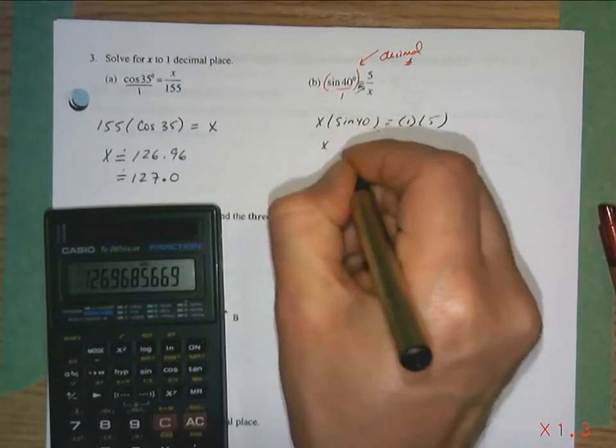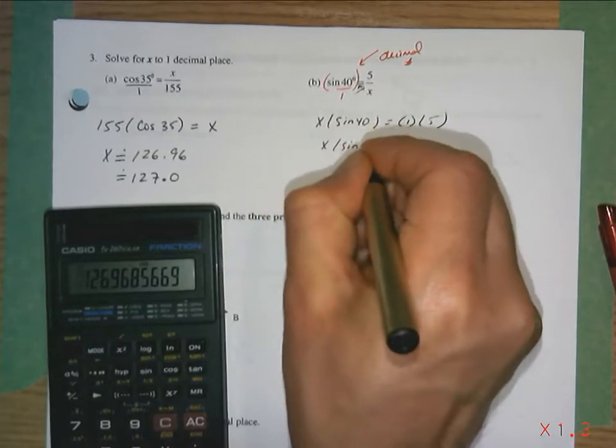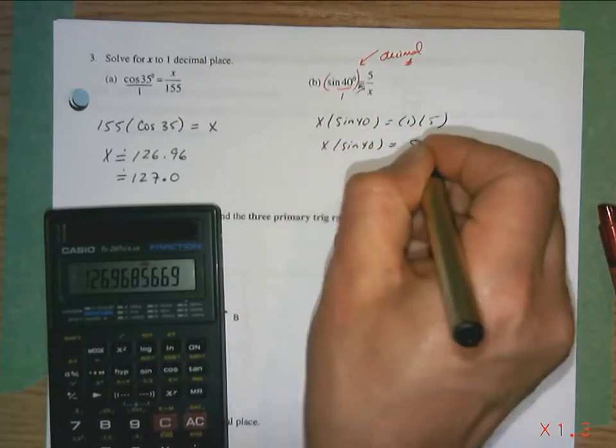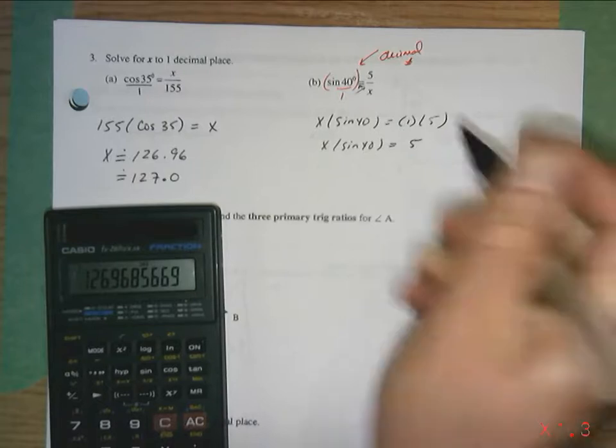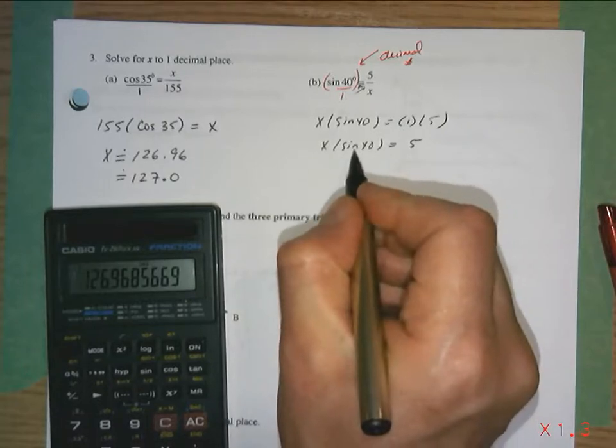Well, that's going to equal x sine 40 equals 5 because 1 times 5 is simply 5. Now remember, this is just a decimal. This is just a number.